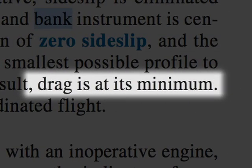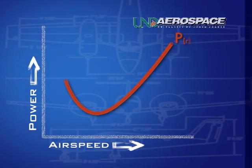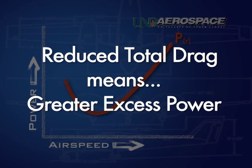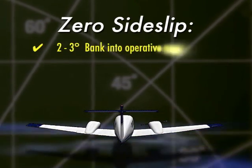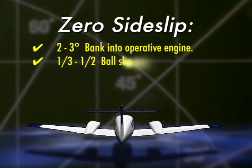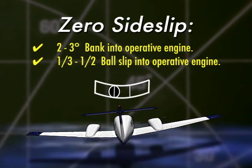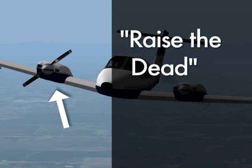Referring to the power available versus power required curves, the pilot should remember that the power required curve is a function of the total drag acting upon the aircraft. A reduction in total drag reduces power required for level flight, thus providing greater excess power. The pilot should establish two to three degrees of bank towards the operative engine and one-third to one-half ball slip into the operative engine. The phrase 'raise the dead' is a helpful memory aid for establishing a zero sideslip. If the pilot desires to use rudder trim, it should be set at this time.